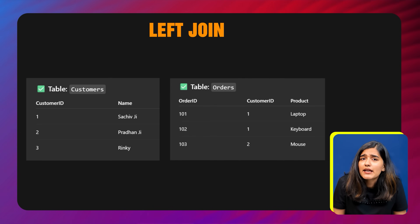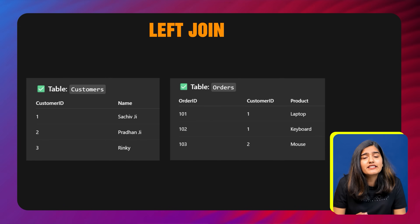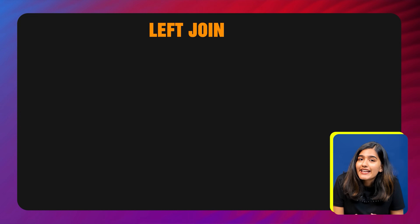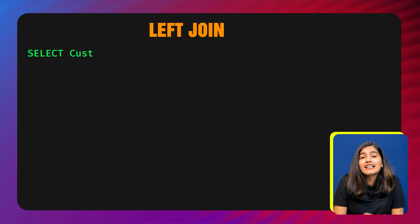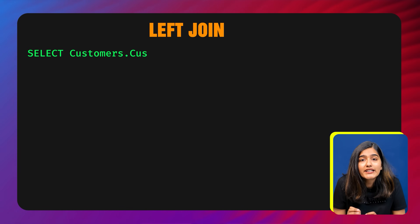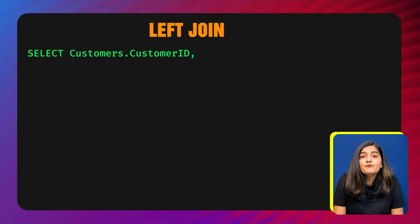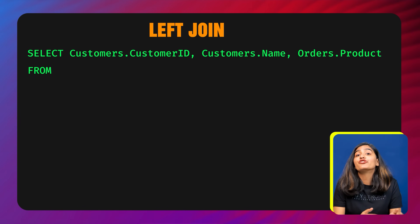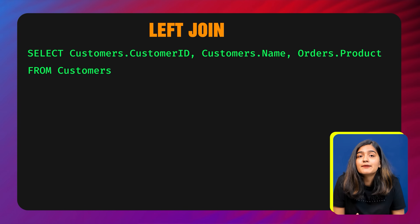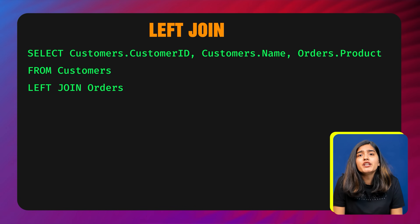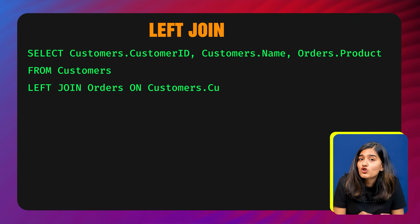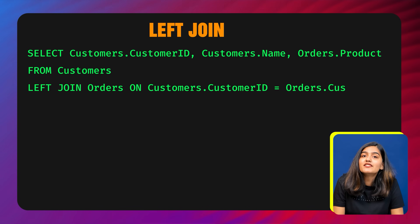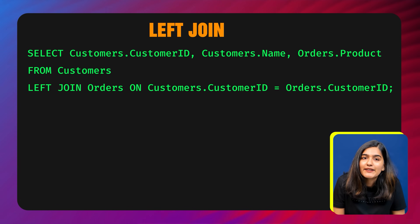So what does a left join query say? SELECT customers.customer_id, customers.name, orders.product FROM customers LEFT JOIN orders ON customers.customer_id = orders.customer_id.